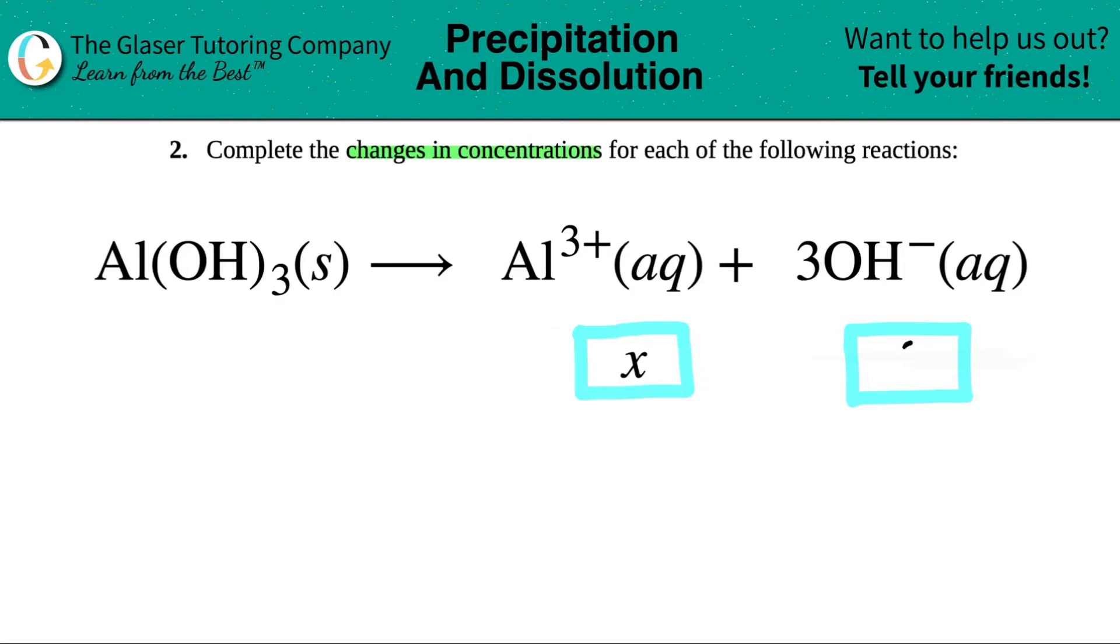But because we labeled this one as x, what is the change in the concentration of the hydroxide? Remember, any time we have a change in concentration, we always look at the balanced equation, specifically the coefficients.